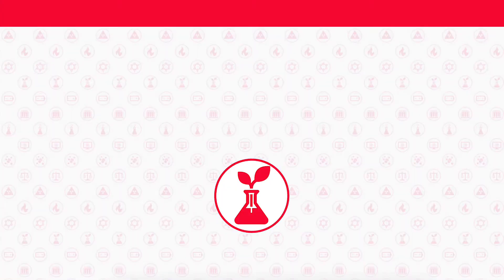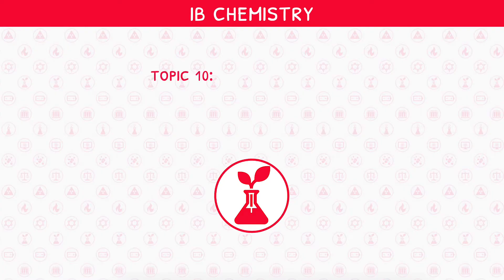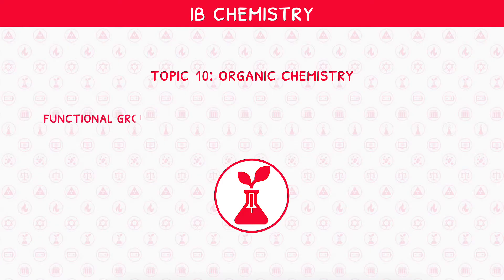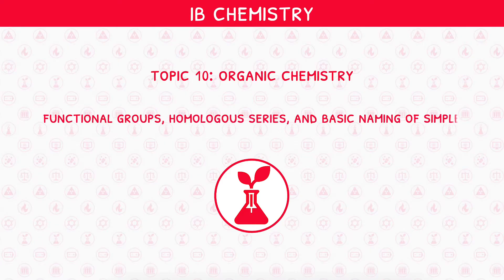Welcome back to our IB Chemistry video series. This is the first video in IB Chemistry Topic 10, Organic Chemistry, where we will be looking at functional groups, homologous series, and basic naming of simple chains, ethers, and esters.